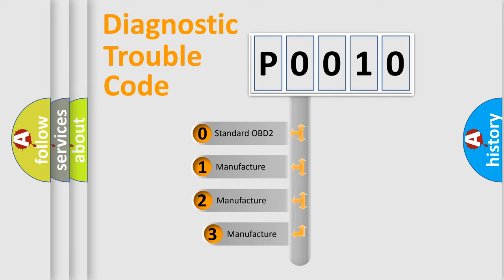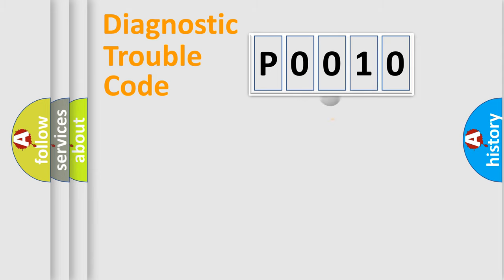If the second character is expressed as zero, it is a standardized error. In the case of numbers 1, 2, or 3, it is a manufacturer-specific expression of the car-specific error.